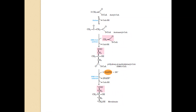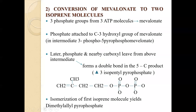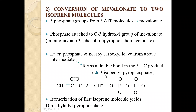The second step is the conversion of mevalonate to two isoprene molecules. Here, three phosphate groups are transferred from three molecules of ATP onto the mevalonate. When these three phosphates are transferred, it forms 3-phospho-5-pyrophosphomevalonate. The phospho group attached to the third carbon is a good leaving group, so that phospho group and the nearby carboxyl group are eliminated to form the five-carbon product delta-3-isopentenyl pyrophosphate.